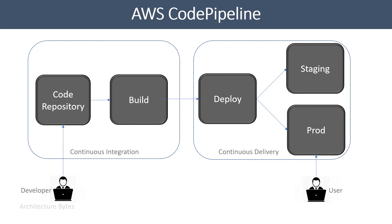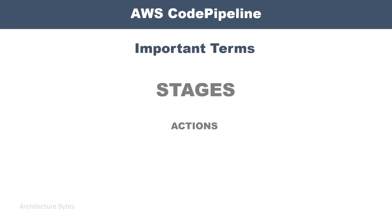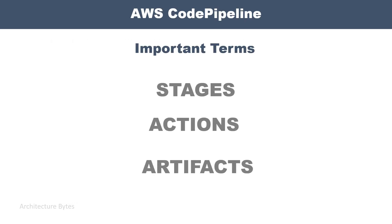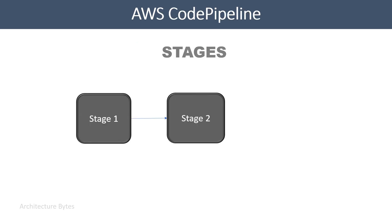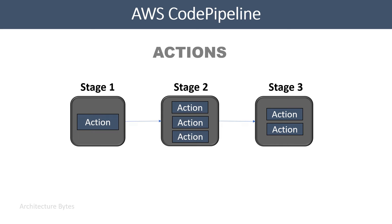The important terms are stages, actions, and artifacts. Stages are logical units in an AWS Code Pipeline. A pipeline would have a minimum of two stages — the first stage would be a source stage, followed by one or more additional stages. A stage is made up of one or more actions. An action is simply an operation that is performed on an artifact. Actions within a stage can run in sequence or in parallel.